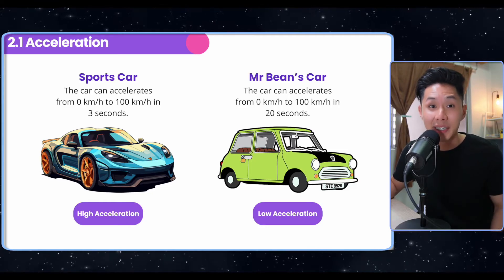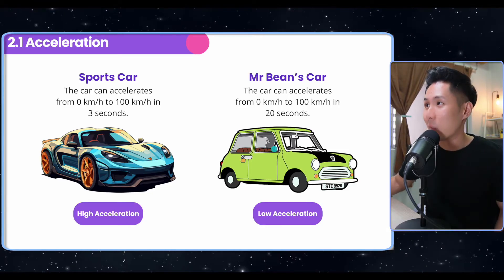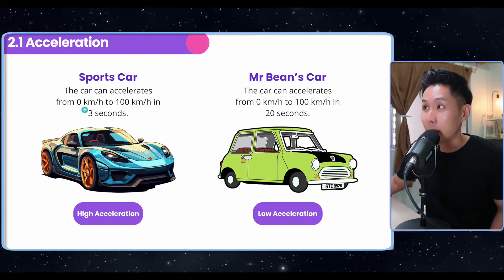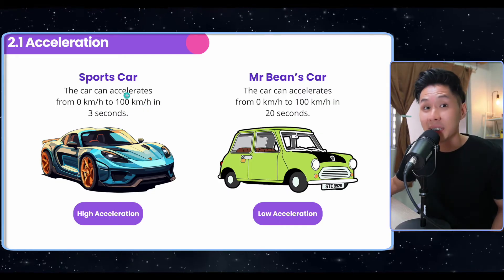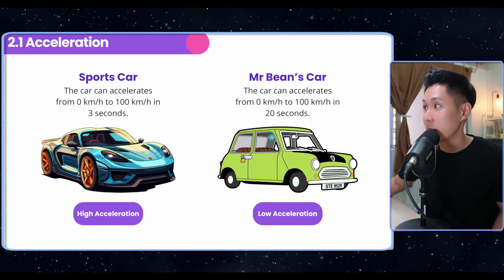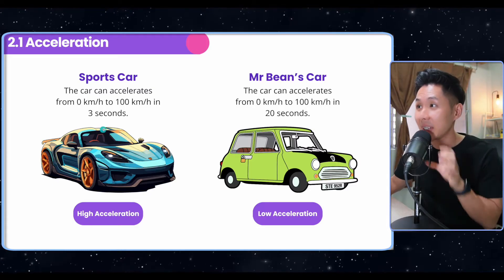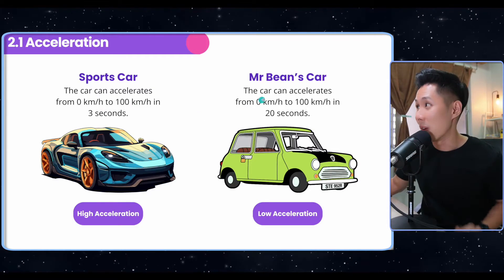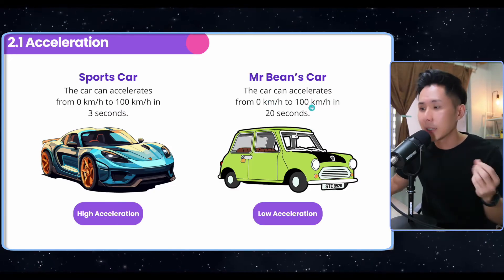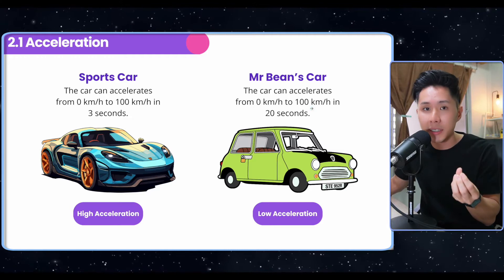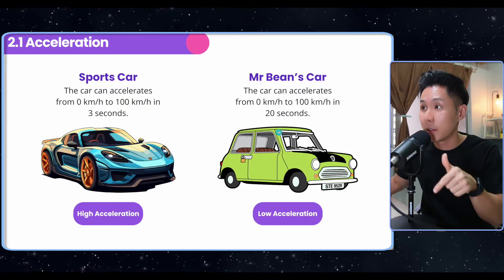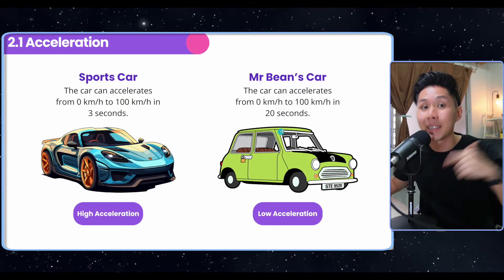We already learned this in IGCSE physics. What it means is how fast an object can move from, for example, 0 km per hour to 100. So in this case here, a sports car will definitely have a higher acceleration than Mr. Bean's car because they can go from 0 to 100 in 3 seconds, whereas Mr. Bean's car will take 20 seconds to reach the same speed. So this is a vital difference between velocity, speed, and acceleration. Speed is how fast they are traveling at that particular time. Acceleration is about how fast it gets to that speed.